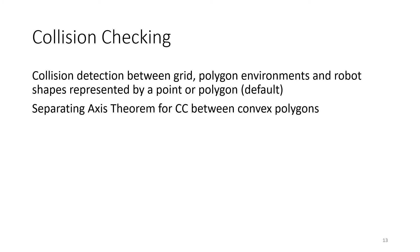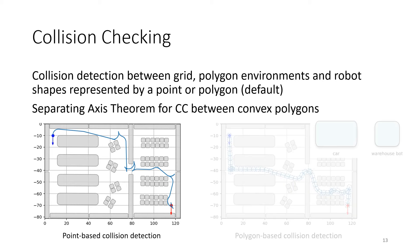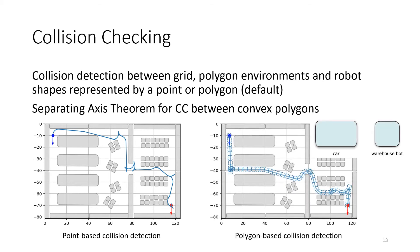In many path planning libraries the robot is assumed to be a point, which simplifies the collision checking against obstacles. To bring BenchMR closer to real-world mobile robot applications, our default collision detection is based on polygons. As shown on the right, the robot can be represented by convex polygons which are tested for collision with both grid-based and polygon-based environments. We use the separating axis theorem for efficient collision checking between convex polygons.